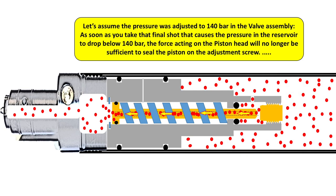At some point, let's assume that the pressure was adjusted to 140 bar in this valve assembly. As soon as you take that final shot that will now cause the overall pressure in the reservoir to drop below this preset 140 bar, the force acting on the piston head can no longer be sufficient to seal this piston on the adjustment screw. And it is at this point where it will be considered that your regulator is now permanently open.